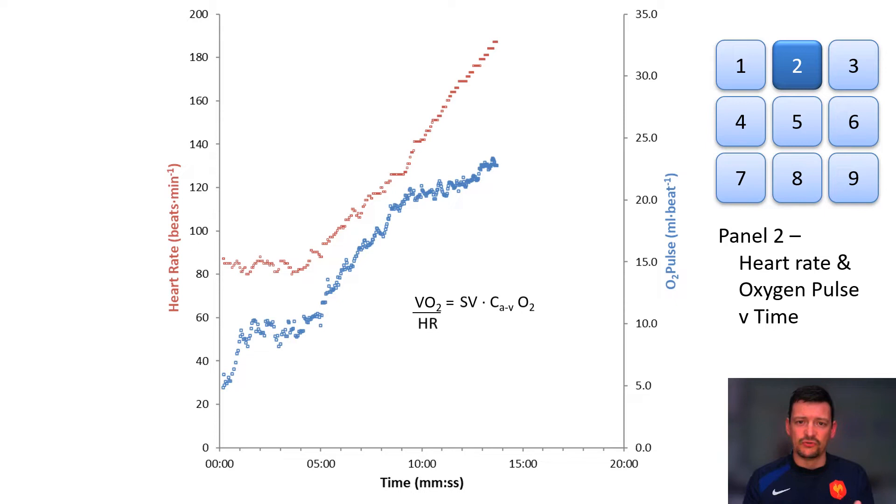If we understand both of those two responses in a normal subject, you're going to see an initial increase in stroke volume before it plateaus, and the AVO2 difference will increase linearly throughout the exercise test. If we combine those two responses, you see that initial increase as both are going up.